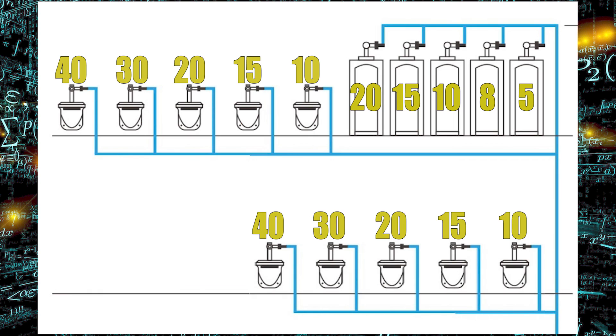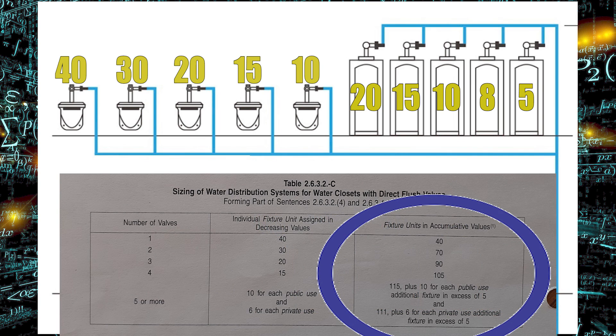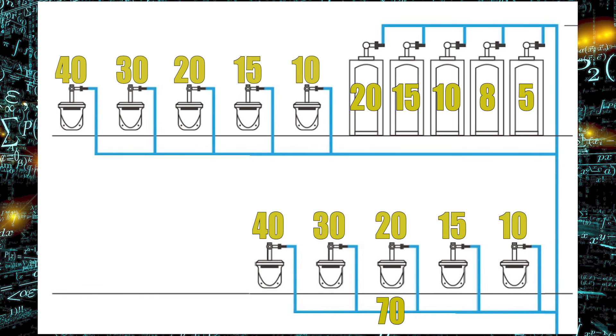Now let's look at those water closets on the top floor. Between these two water closets, we have 70 fixture units. Between this one off to the right, 90 fixture units. One more connection off to the right, 105 fixture units. And then the pipe that provides water to all five water closets is 115. Once again, I'm looking on table 2632C, and I'm looking in the cumulative values right on the right-hand side column. Now the water closets on the lower floor are going to look exactly the same as the ones on the upper floor once again.